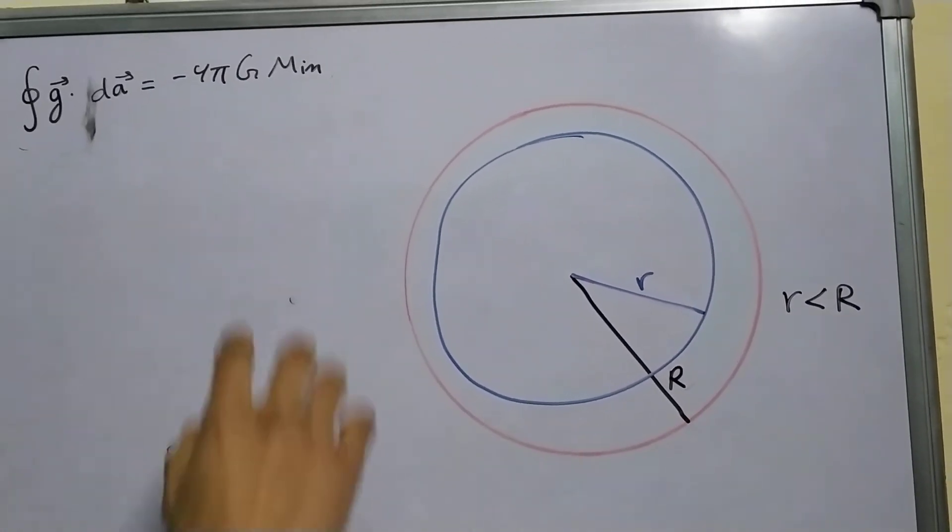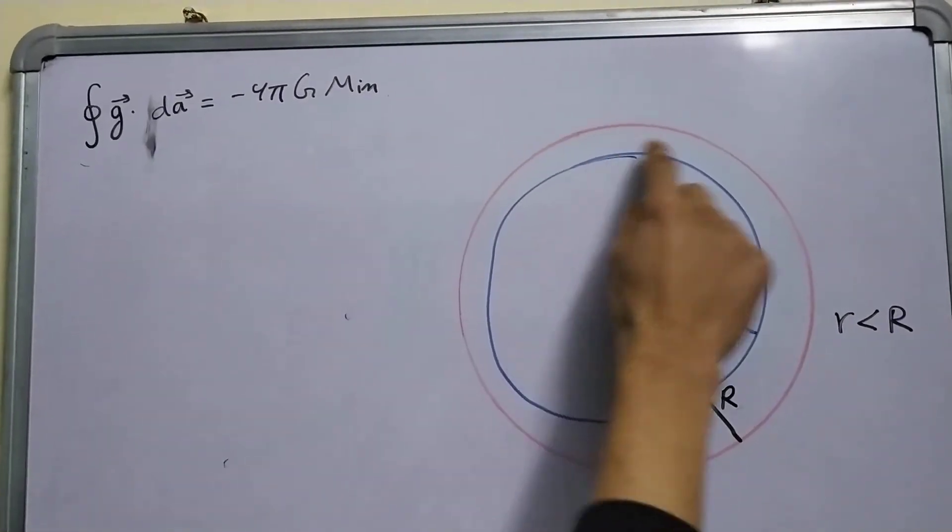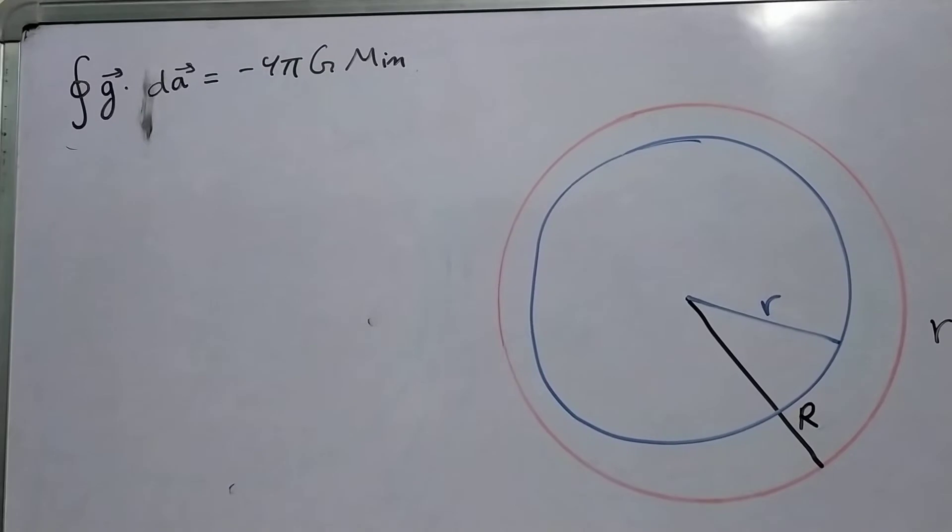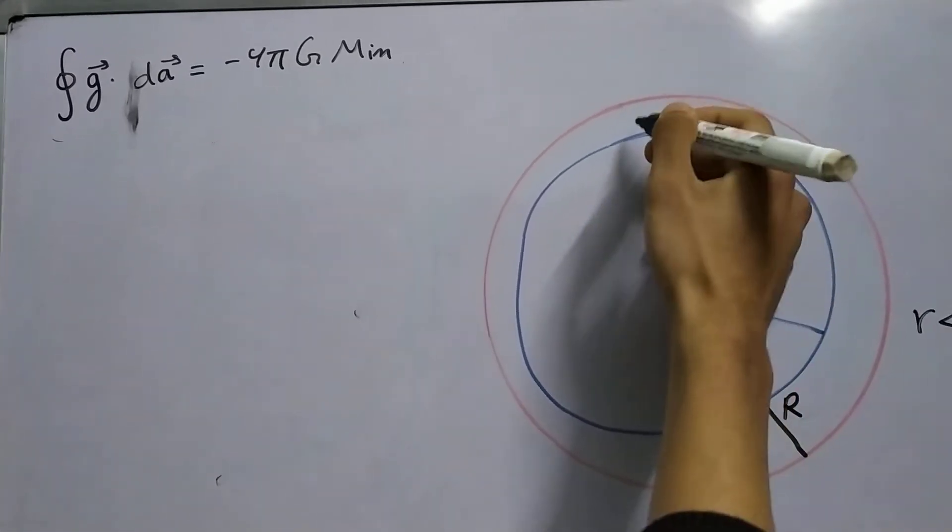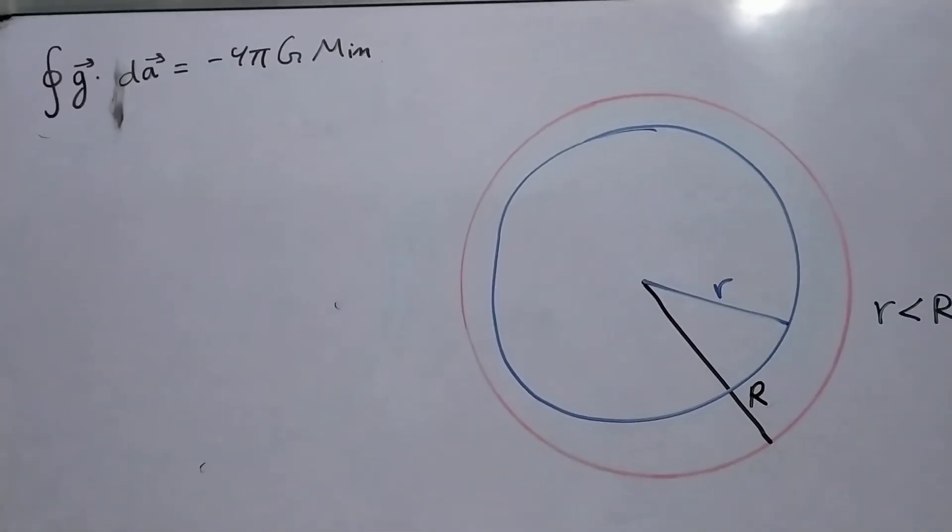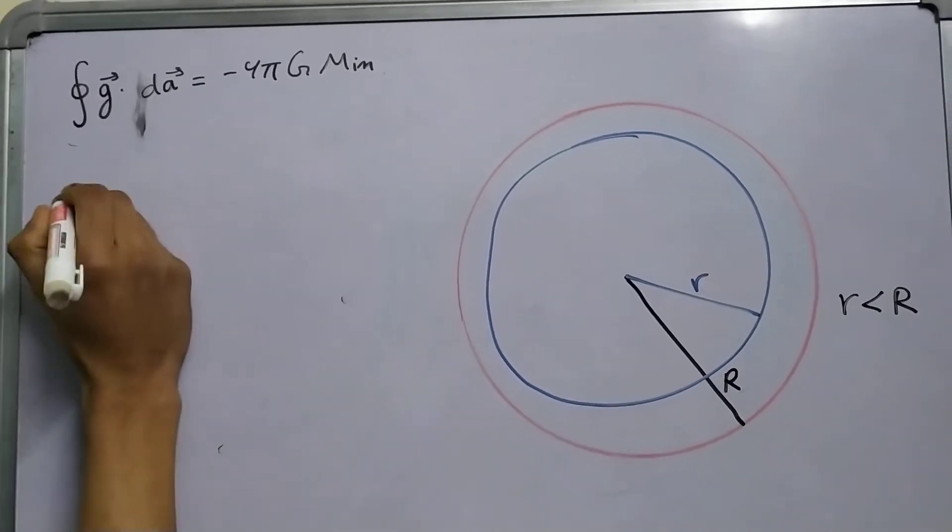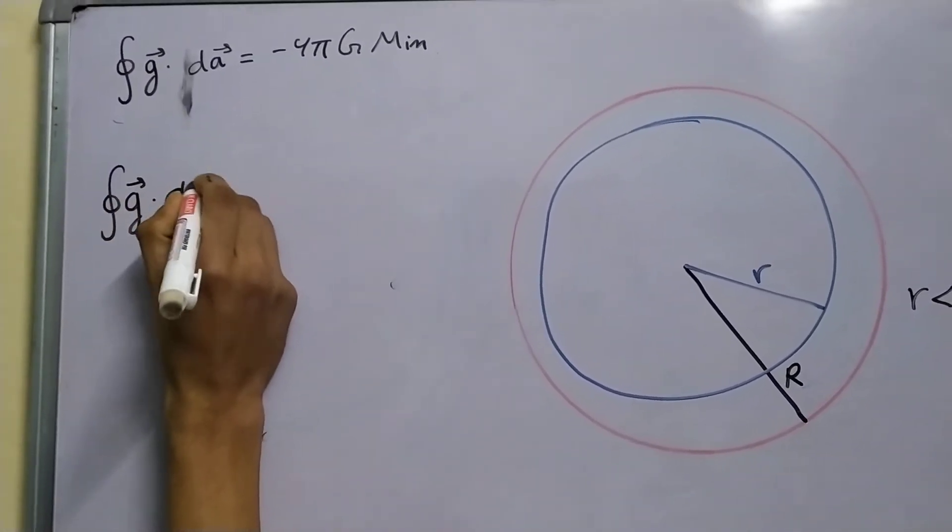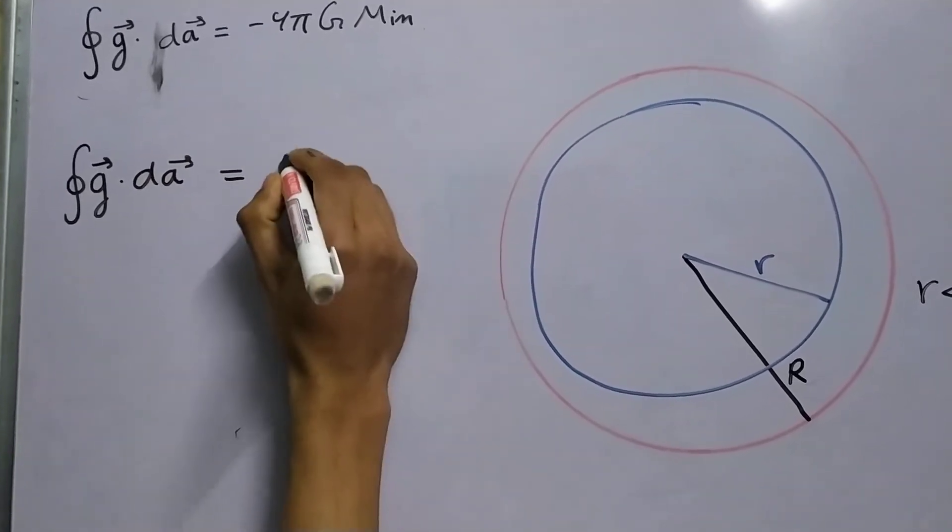Now, we will use Gauss law on this blue surface. Since this is a hollow sphere, the mass inside the blue region is obviously 0. So, this gives us that integral g dot dA will be equal to 0.